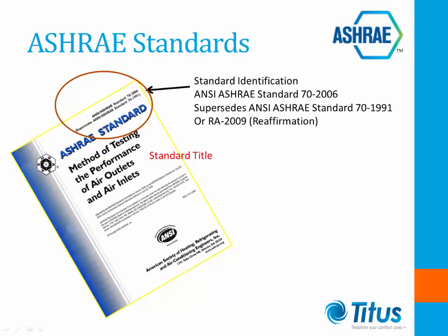Now let's look at how to identify an ASHRAE standard. At the top right-hand side of the page is the identifying number, such as ANSI ASHRAE Standard 70-2006. This means that standard number 70 was last published in the year 2006. There may be further identification below, such as supersedes 70-1991, which means that the earlier 1991 version of the standard is now obsolete. If it says RA 2008, it means that the 2006 version was reaffirmed and is still being considered accurate by the Cognizant Technical Committee and was reprinted and still relevant in 2008.